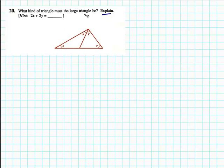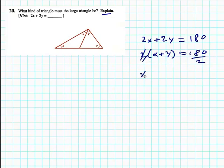What kind of triangle must the large triangle be? Explain. So notice we have Y and here's Y and X and here's X. And so for the large triangle, the sum of the angles is 2X plus 2Y. And that has to add up to 180. By the way, that was the hint as well. And so let's just solve the equation a little bit. Factor out the 2 here. Now 2 times that is 180. Divide by 2. So X plus Y equals 90.